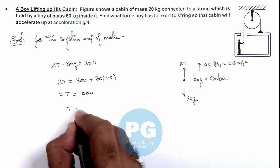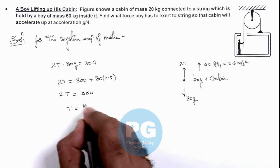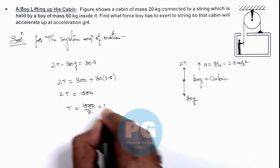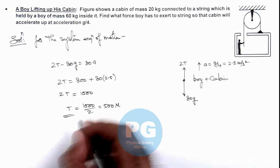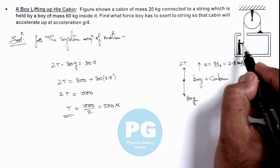And the value of T we are getting is 1000 by 2, which is 500 newton. So T is the tension in string which the boy is holding.